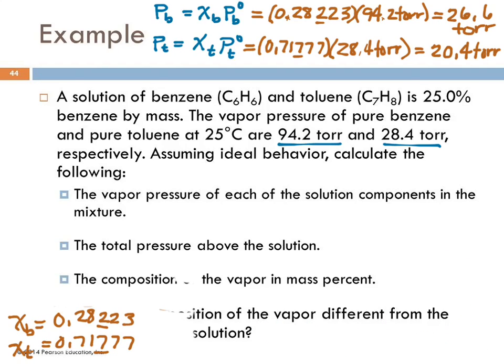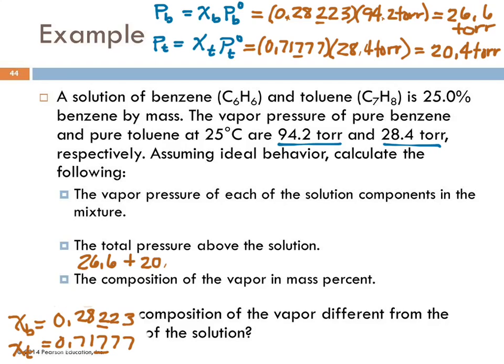Total pressure above the solution: add the two vapor pressures together. 26.6 + 20.4 = 47.0 torr.